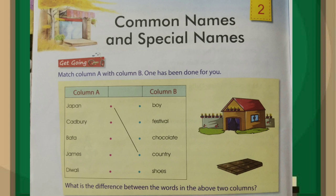There are two columns — Column A and Column B. In Column A you will see Japan, Cadbury, Bata, James, Diwali. And in Column B you will see Boy, Festival, Chocolate, Country, Shoes. Now, Japan is here — Japan is the special name of a country. So you have to match Japan to country. Japan starts with a capital letter, so Japan is a proper noun, a special name of a country. And country is a common noun.